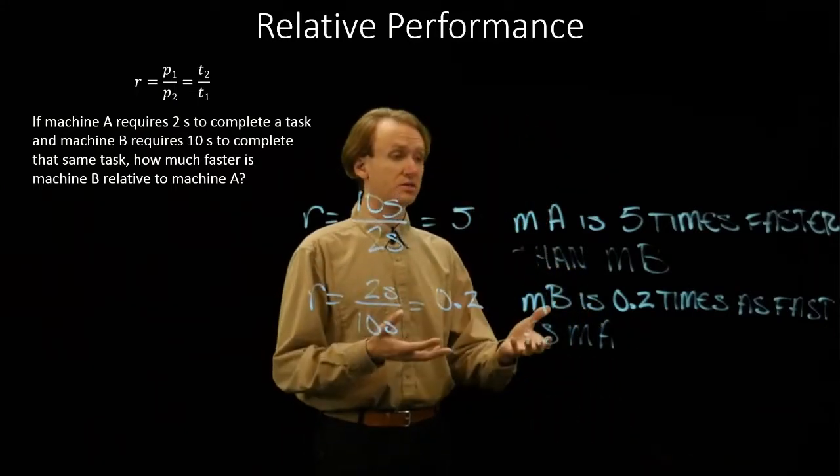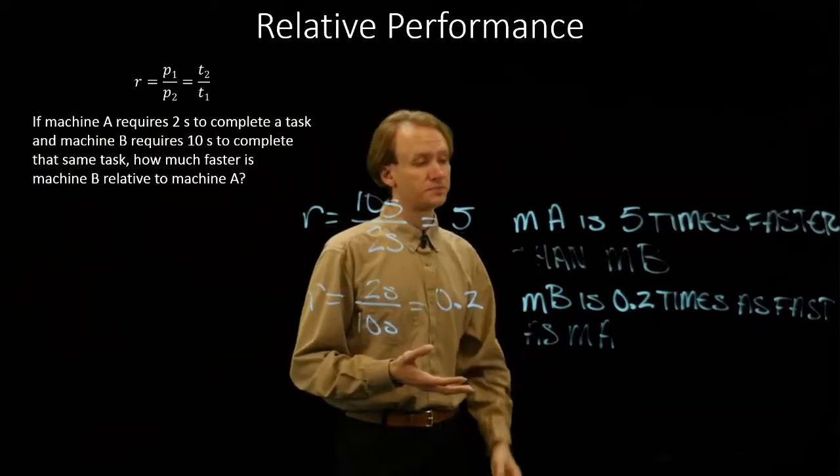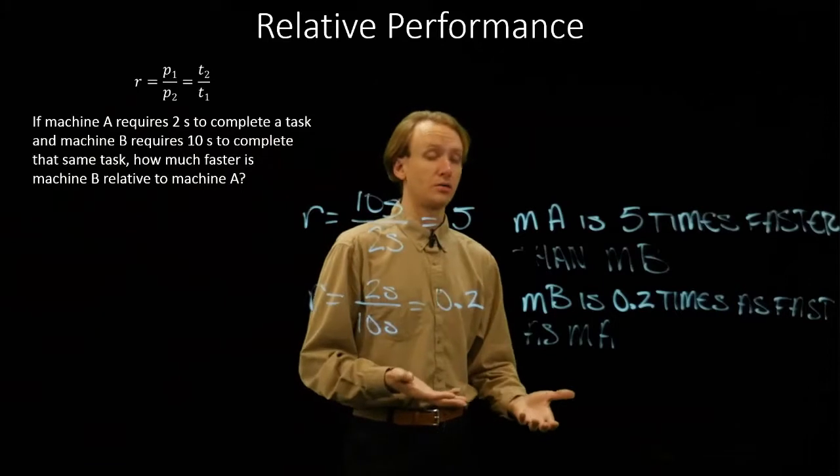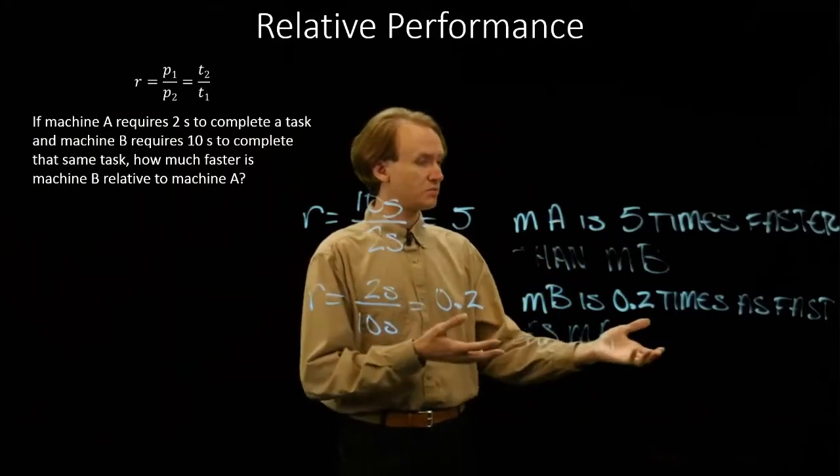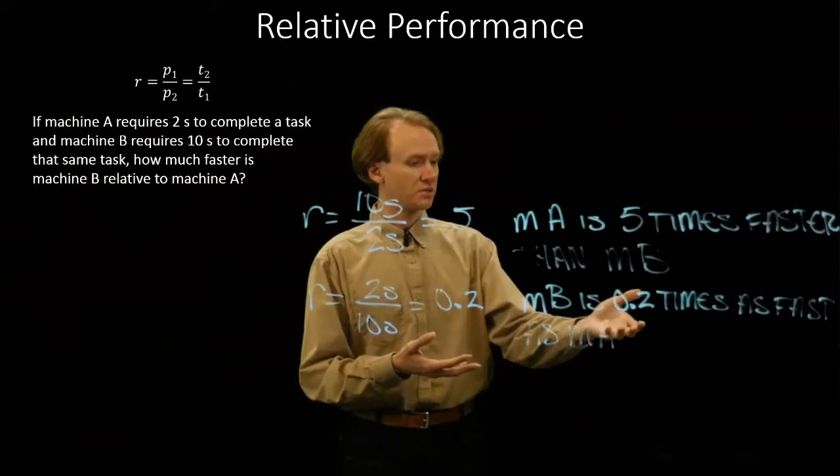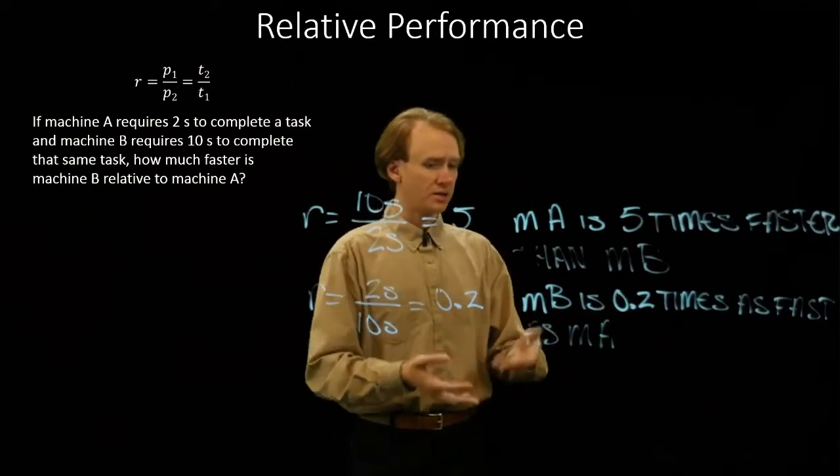Now, since we've compared the same two machines, these statements need to be equivalent, and they are. In this case, we're saying the machine A is five times faster than machine B. Here we're saying the machine B is one-fifth as fast as machine A, and these are equivalent.